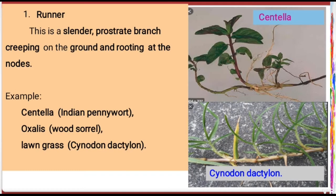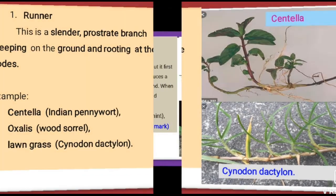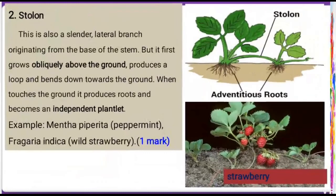The second sub-aerial stem modification is stolon. Stolon is a cylindrical lateral branch originating from the base of the stem. Lateral branches arise and diverge outward from the base of the stem. There are two characters present in stolon.